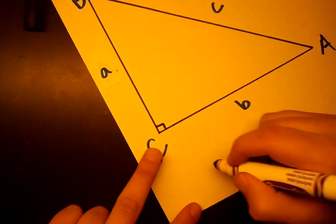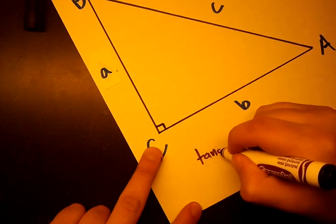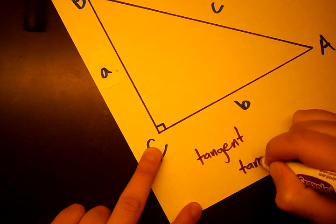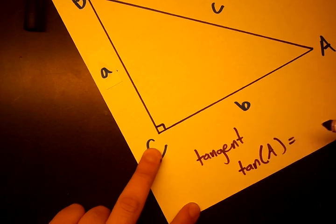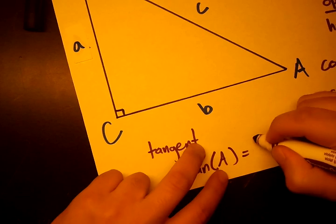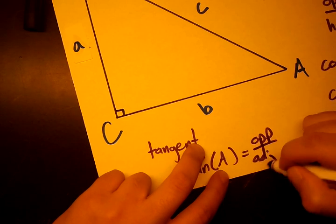And the last one that we really need to go over is tangent, spelled like this and abbreviated t-a-n. Tangent of an angle equals opposite over adjacent.